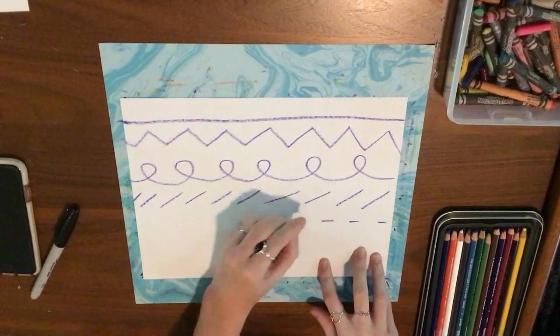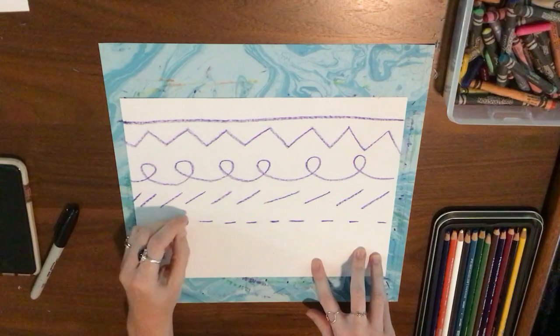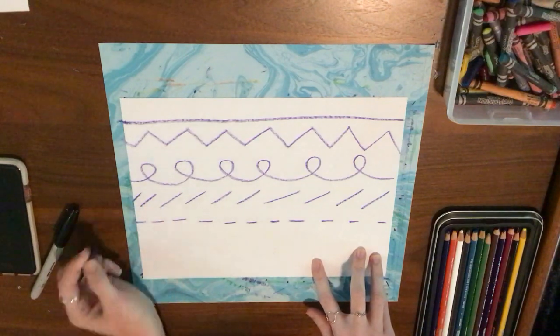Now I'm drawing a broken line. A broken line is a line that goes and then stops and then goes and then stops.